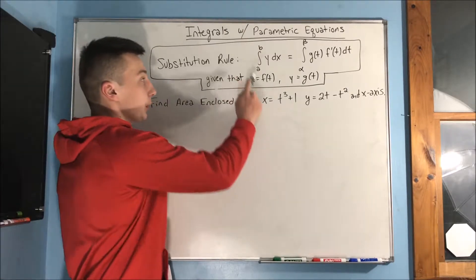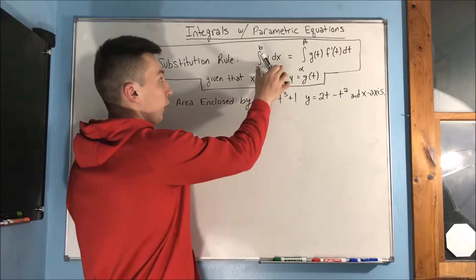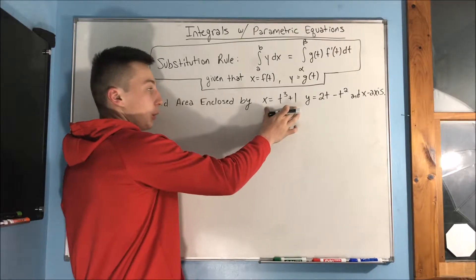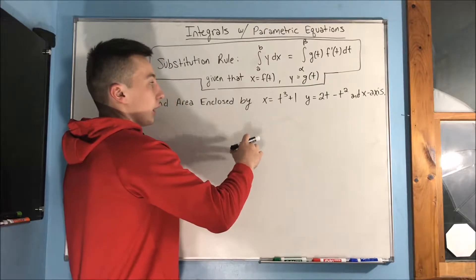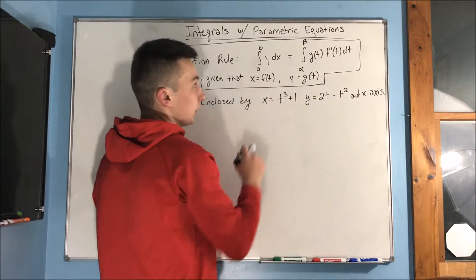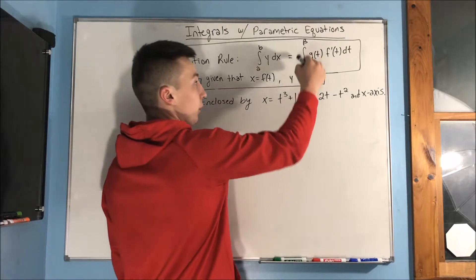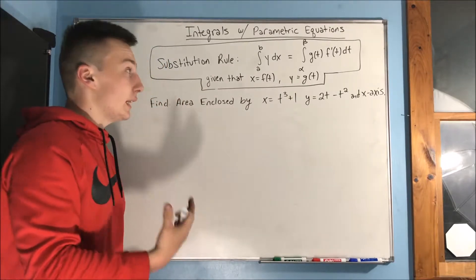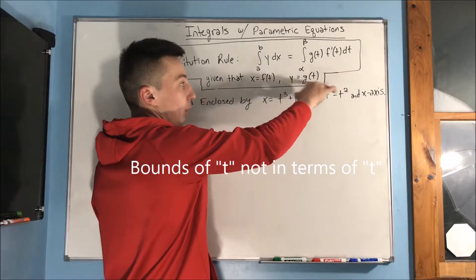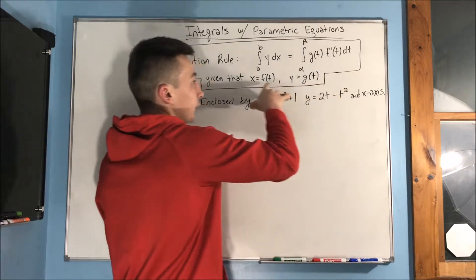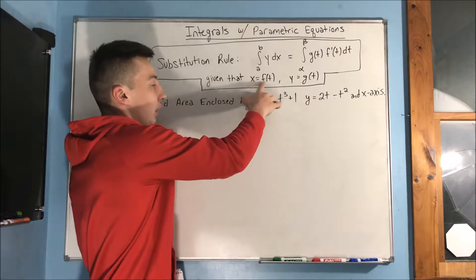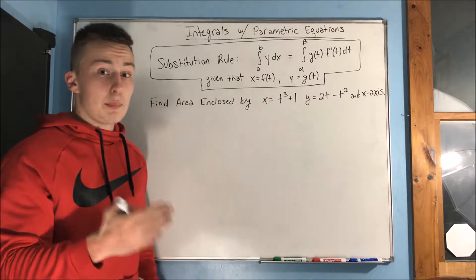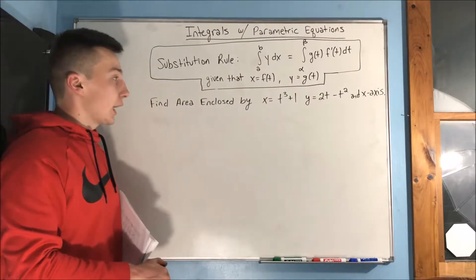Well, you can just use the substitution rule, which is up here. Normally, when we integrate, we have the integral from a to b of y dx. But with parametric equations we have two equations — the x equation and the y equation — shown as x equals f of t and y equals g of t. So we can just integrate with different bounds; that's the alpha and the beta, which are bounds in terms of t. You have g of t, which is your y, and f prime of t, which is just dx/dt — the derivative of the x piece — and dt at the end.